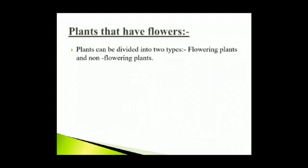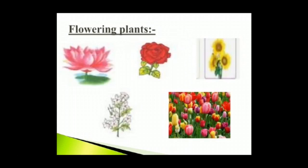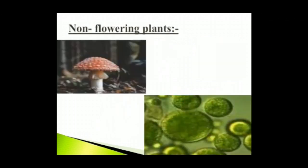Plants can be divided into two types: flowering plants and non-flowering plants. Flowering plants include rose, jasmine, sunflower, lotus, tulip and daisy. Non-flowering plants include algae, mosses and mushrooms.